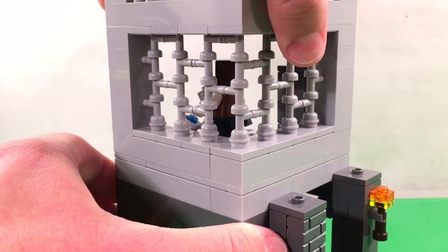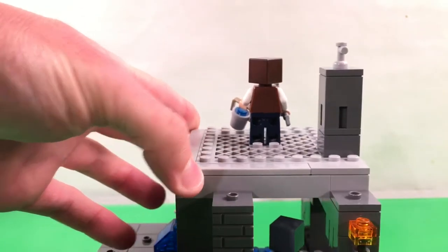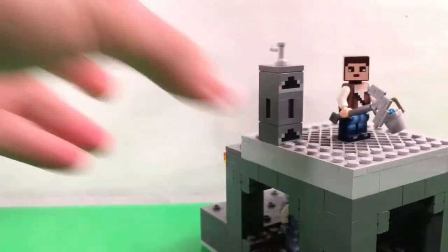Now this whole thing is removable to get access inside for easy play. Here's more of the platform, and then we have the roof.